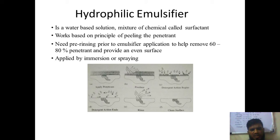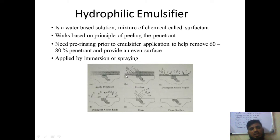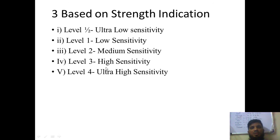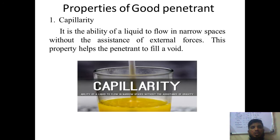The best example for hydrophilic emulsifiers is detergents — the same principle studied in 12th grade, where soap particles have a head and tail structure that goes into the surface to remove stain particles. Regarding penetrant sensitivity levels based on strength of indication: Level 1 is ultra-low sensitivity, Level 2 is low sensitivity, Level 3 is medium sensitivity, Level 4 is high sensitivity, and Level 5 is ultra-high sensitivity. These are the five types of penetrant sensitivity classifications.